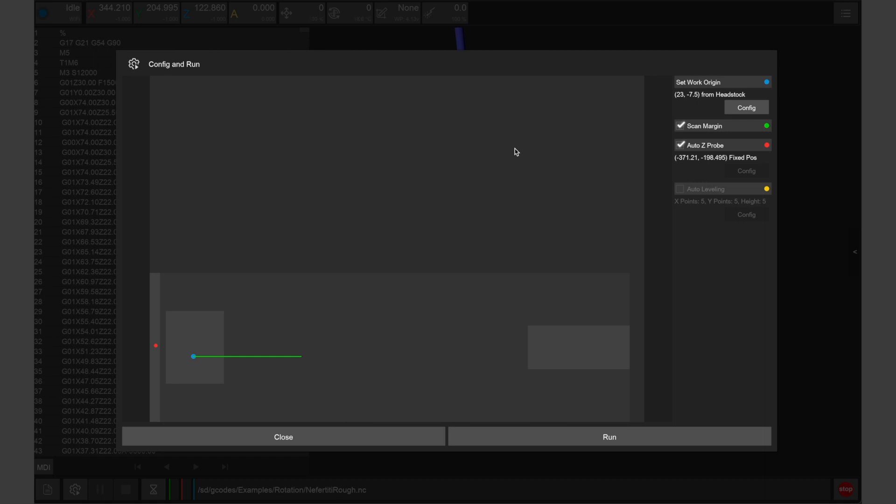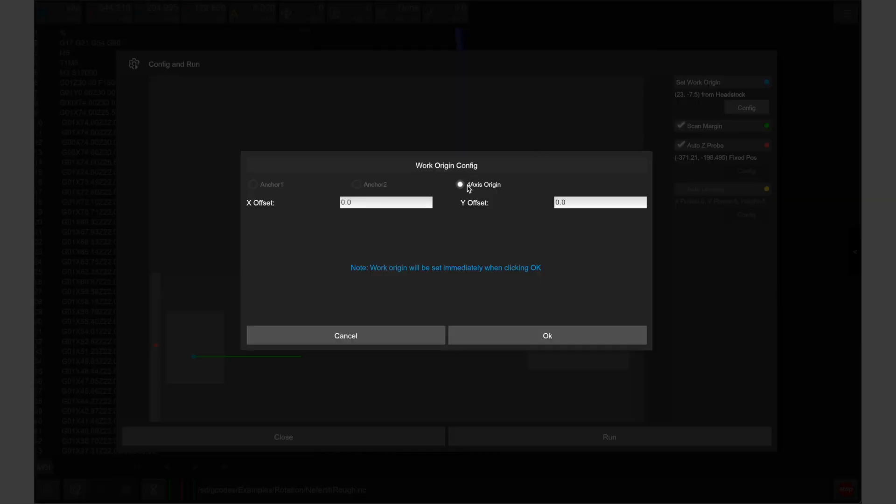Within the Carvera controller's config and run window, we should see that the fourth axis is set within the work origin menu whenever a fourth axis file has been loaded into the Carvera controller. We want to set our x offset relative to the right edge of the fourth axis headstock while the y offset can be set to zero.